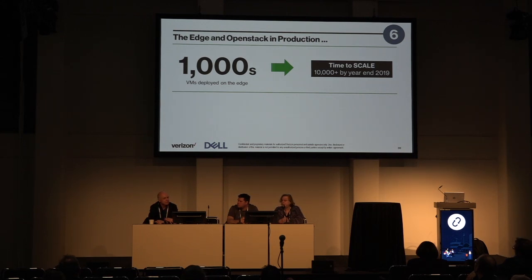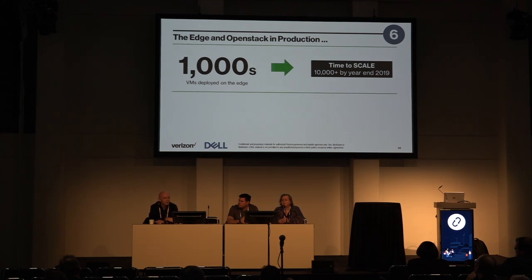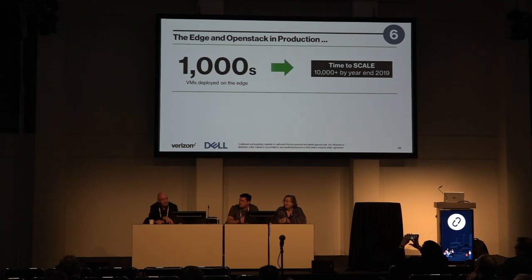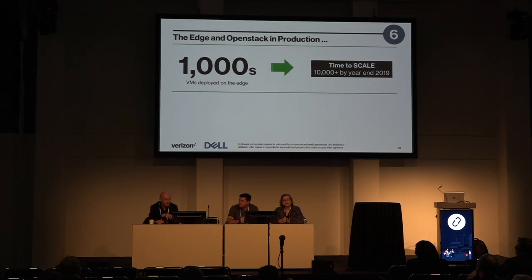This stuff is in the field — not lab stuff. As of a few weeks ago, we've got thousands of virtual machines deployed on the edge, with Fortune 500 customers and lots of smaller ones too. We're projecting over 10,000 virtual machines on the edge in OpenStack by end of 2019. The challenge for us is not only to scale and provision to that, but also to manage and operate it, because customers are now asking us to make changes and modifications.